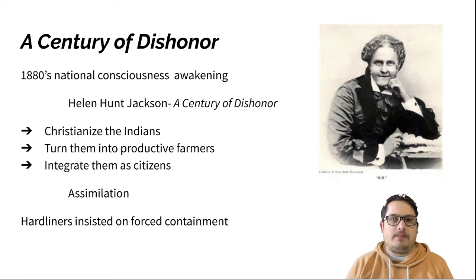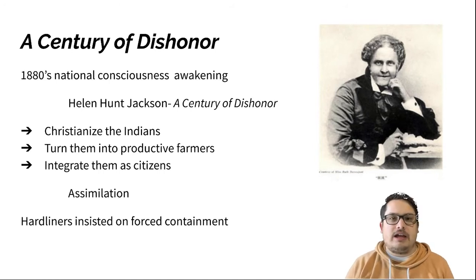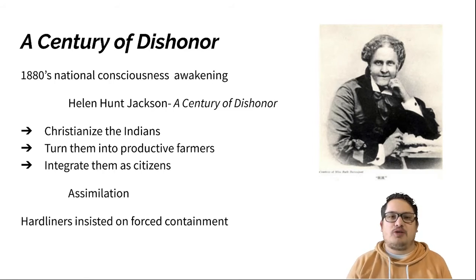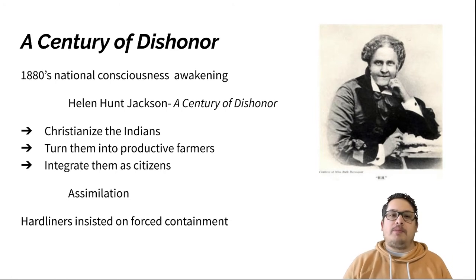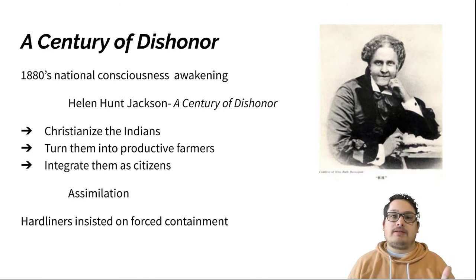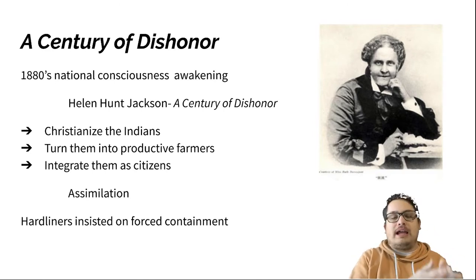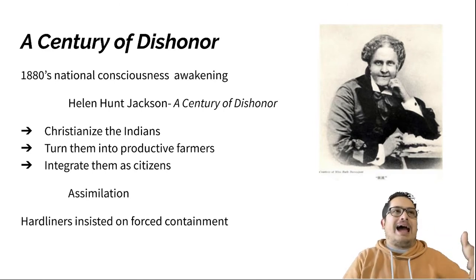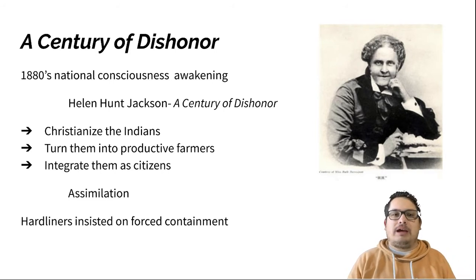One of the main documents of this time period is A Century of Dishonor by Helen Hunt Jackson — a very significant document. When we look back in history, we can talk about people calling out injustices they see at the time, especially things we now would say are really wrong, like the treatment of Native Americans. But maybe those people calling out the injustice aren't as progressive as we will end up becoming in the future — that's the spectrum we can see.